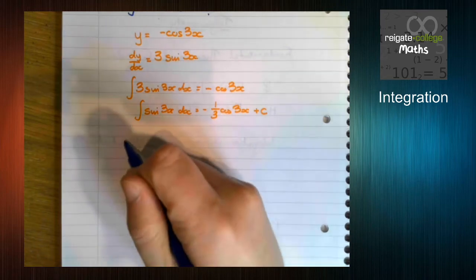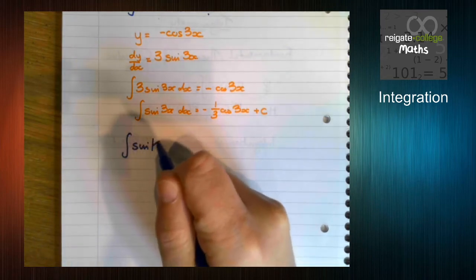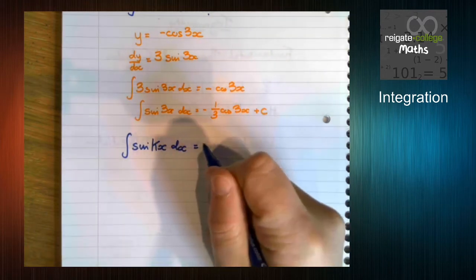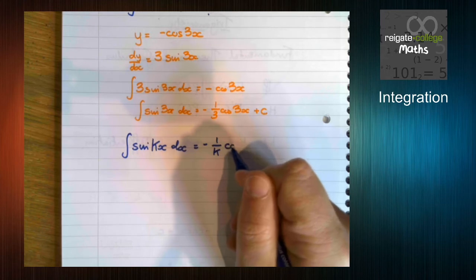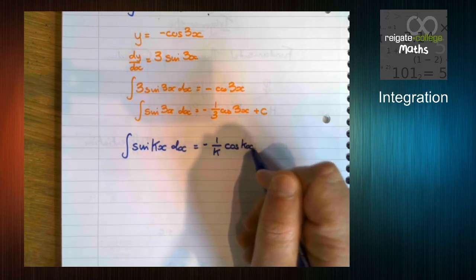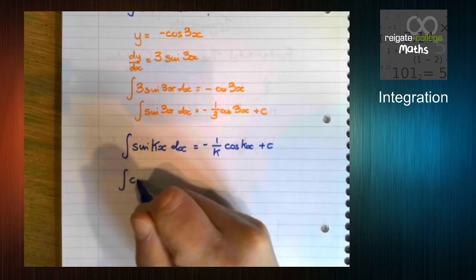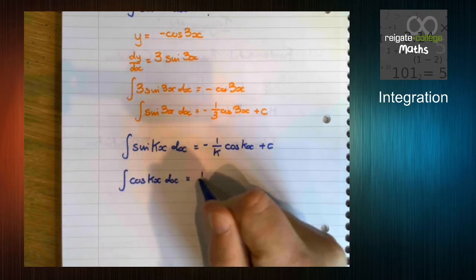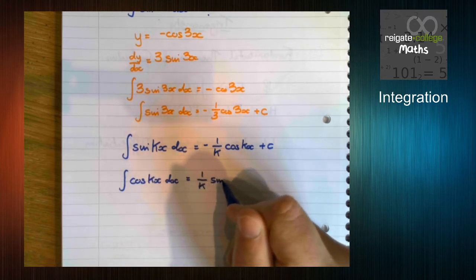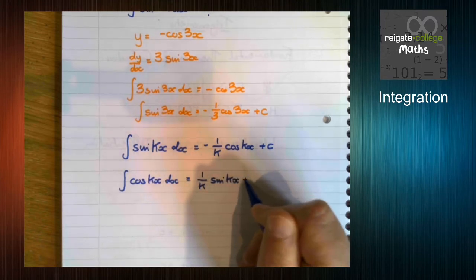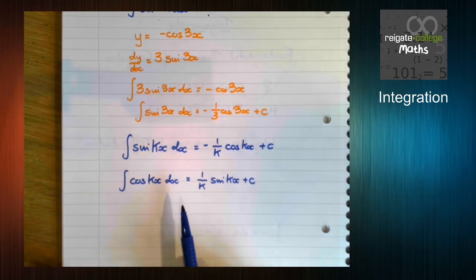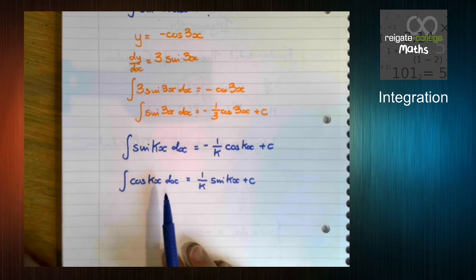So what this means is, in general, the integral of sine kx with respect to x is minus 1 over k cos kx plus c. And again, like before, these two you need to learn. So in reality, if you just learn these two, you're fine, because in the other example, k was 1.